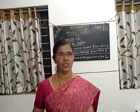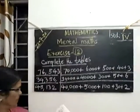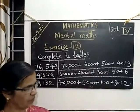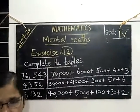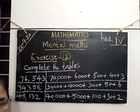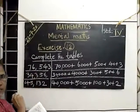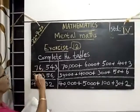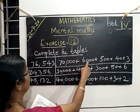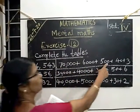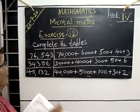Are you ready with your test book? Look here. Exercise 12, complete the tables. First question is 76,543. We are going to expand that number. You have studied the expanded form and the short form of numbers, no? Previously you have studied from that standard on this. Then here also that is the same method. 70,000 plus 6,000 plus 500 plus 40 plus 3.